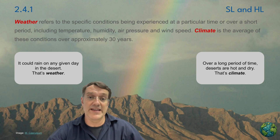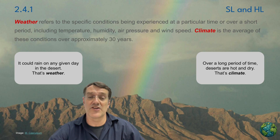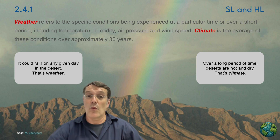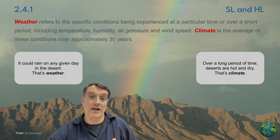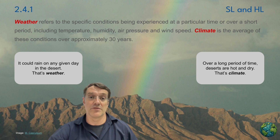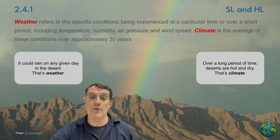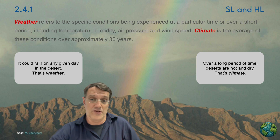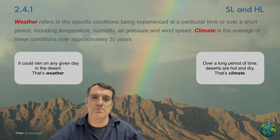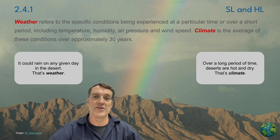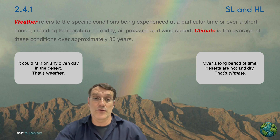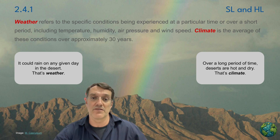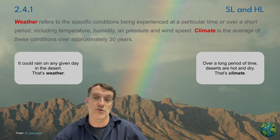This desert scene perfectly illustrates the distinction between weather and climate. While we see evidence of rainfall with this rainbow — that's weather — the climate of the region remains consistently hot and dry when averaged over decades. The sparse vegetation and exposed rock formations testify to the long-term arid conditions that truly define this environment, regardless of the occasional precipitation events like this storm.